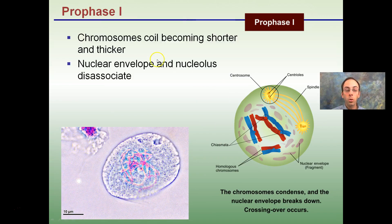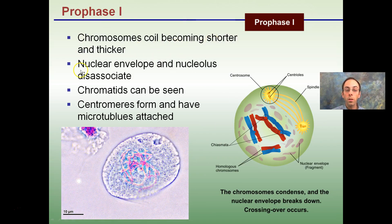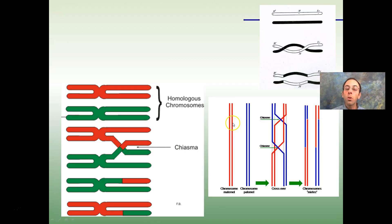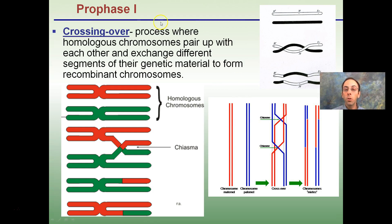Starting with prophase I: chromosomes coil and become shorter and thicker; the nuclear envelope and nucleolus dissociate and break apart; chromatids can be seen; centromeres form with microtubules attached. Similar to prophase in mitosis, we see condensing chromosomes, centrioles developing, nucleolus breaking down. Importantly, crossing over can occur during prophase I.